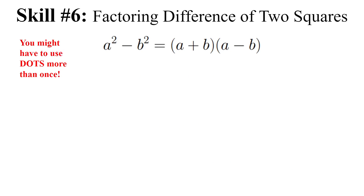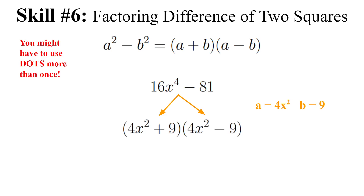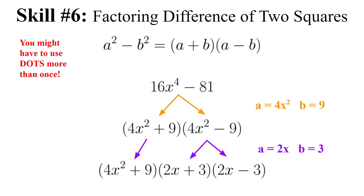Sometimes you apply DOTS more than once. For 16x⁴ − 81: A = 4x², B = 9. This gives (4x² + 9)(4x² − 9). But 4x² − 9 still has a minus sign with two perfect squares — difference of two squares again. Its square roots are 2x and 3, giving (2x + 3)(2x − 3). So the full factored form is (4x² + 9)(2x + 3)(2x − 3). Always look for other types of factoring before you stop.